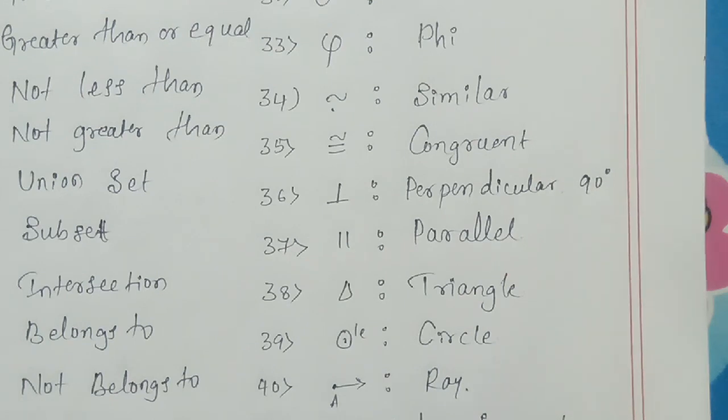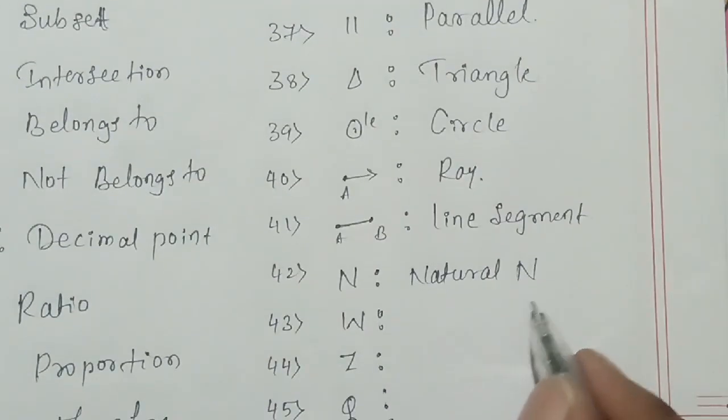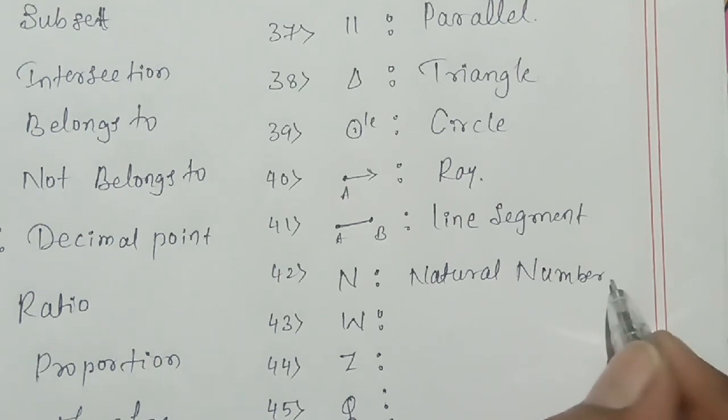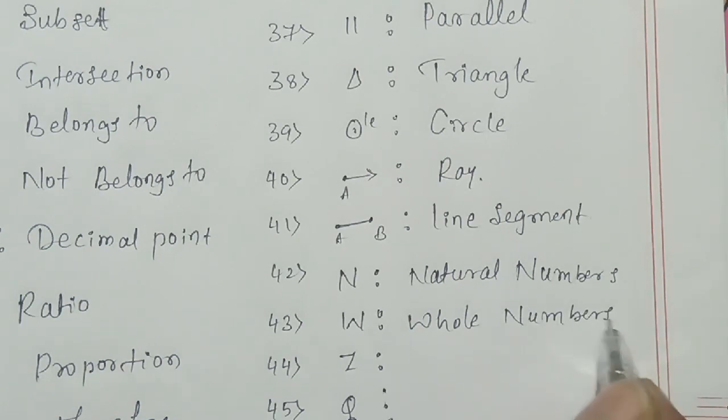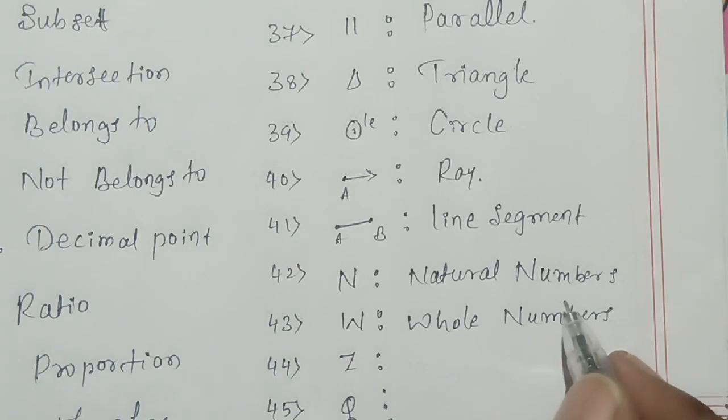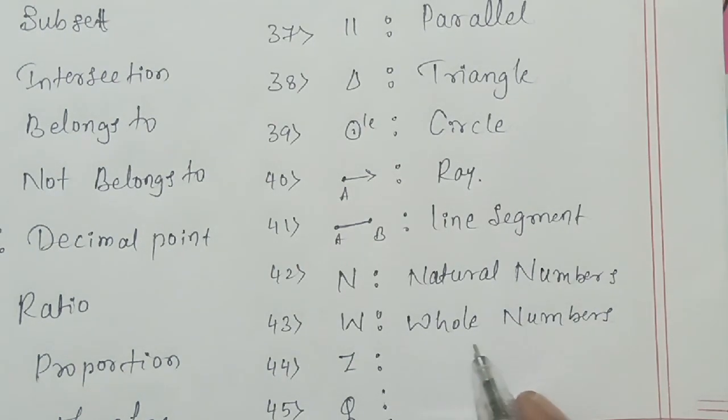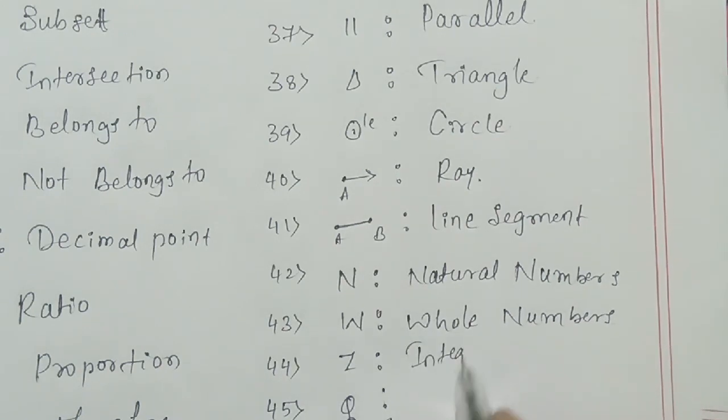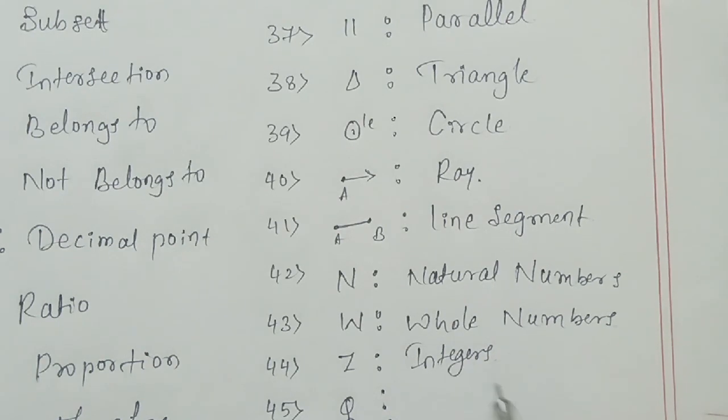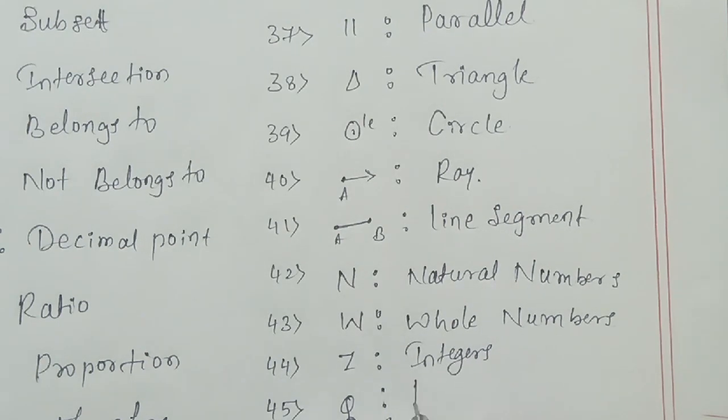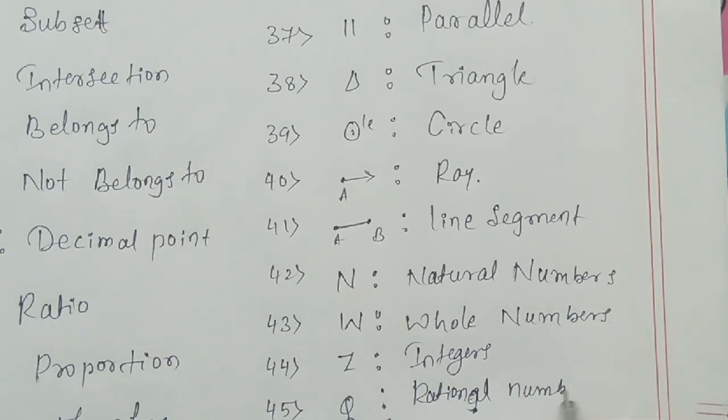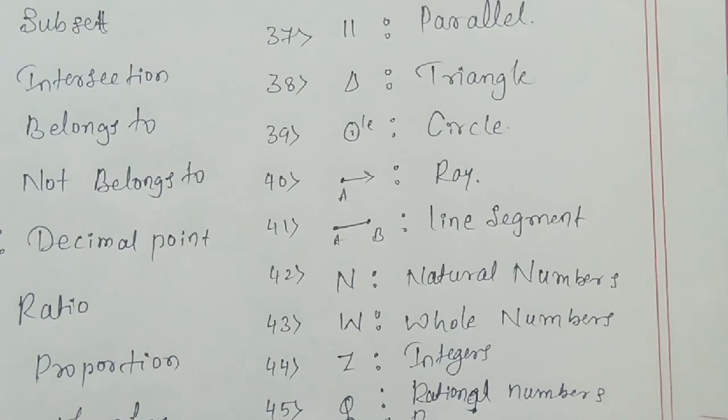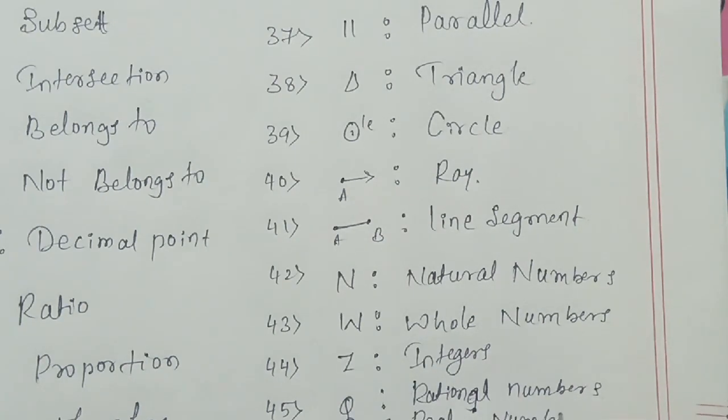N means natural numbers, that is counting numbers. W means whole numbers, including zero. In natural numbers, only counting numbers, that is we start from 1, 2, 3, 4, 5, but in whole numbers, zero with natural numbers. Z means integers, that is zero with positive and negative natural numbers. Q means rational numbers, which is in the form of p by q where q is not equal to zero. R means real numbers.